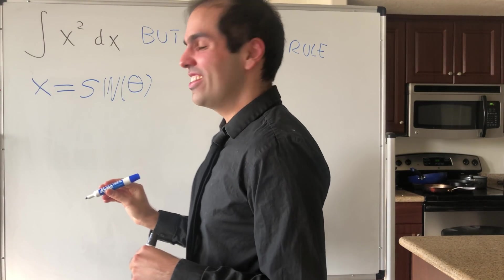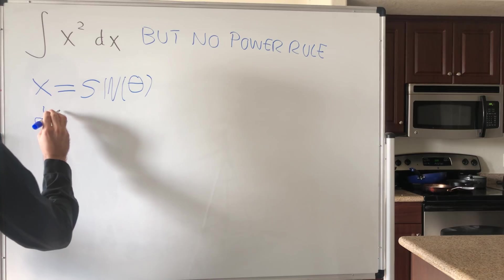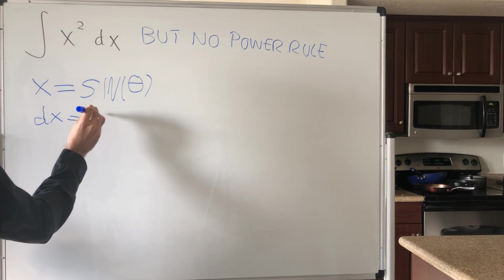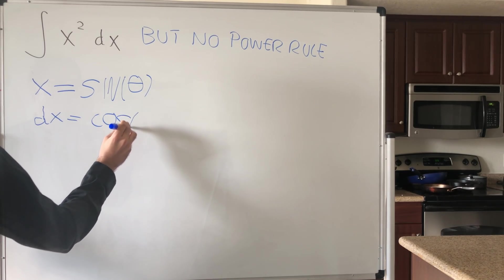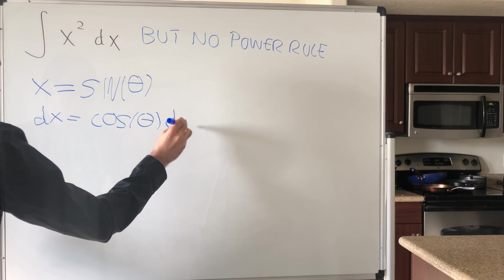So as if this wasn't bad enough, dx - at least I'm not covering the word - dx is cosine of theta d theta.